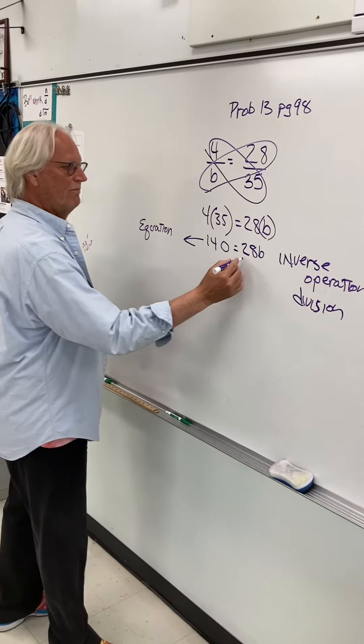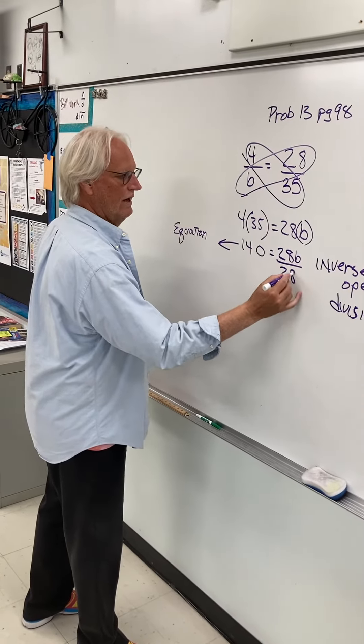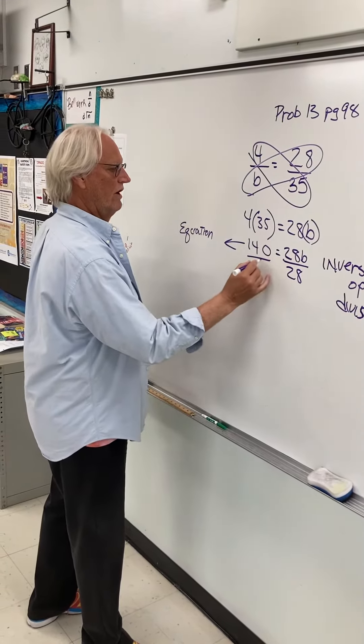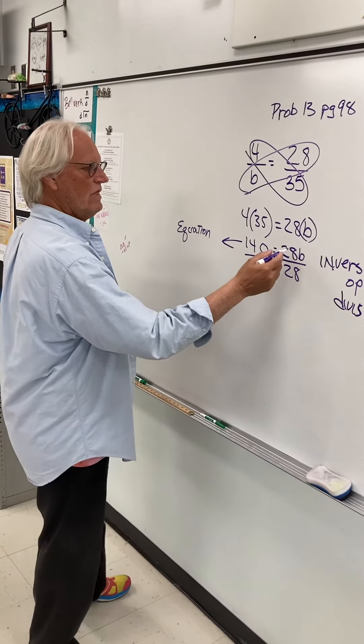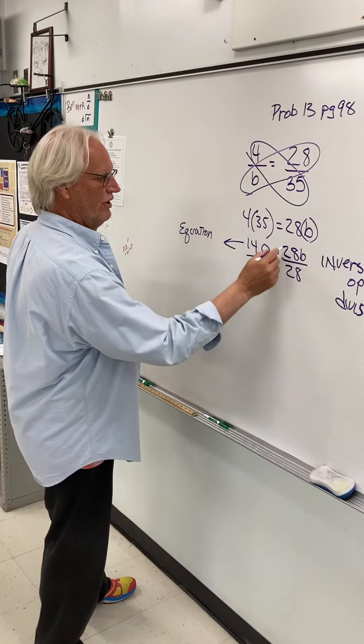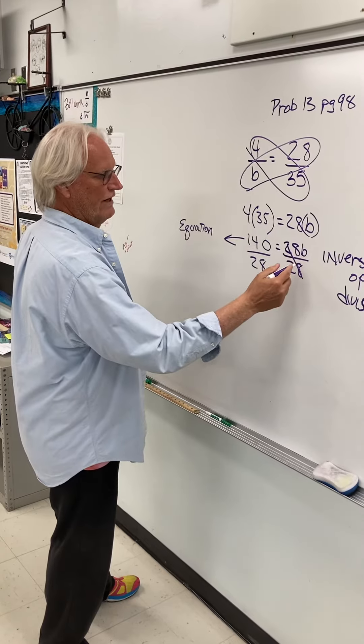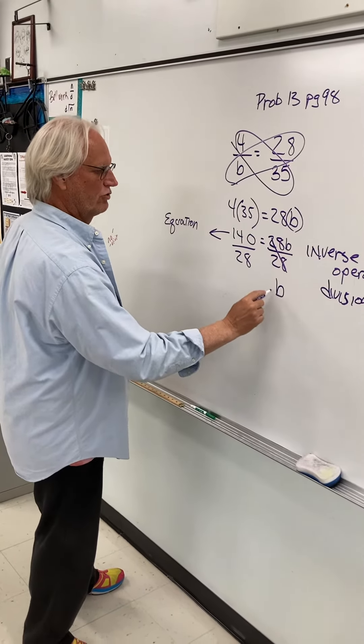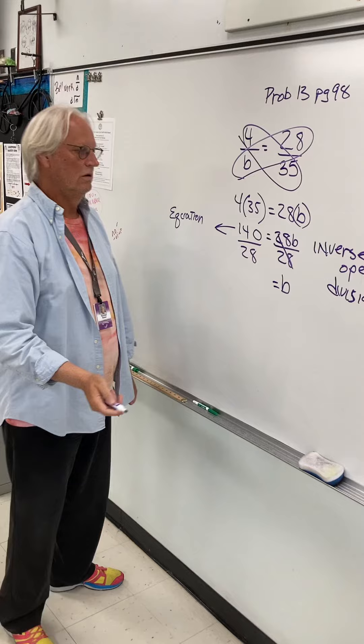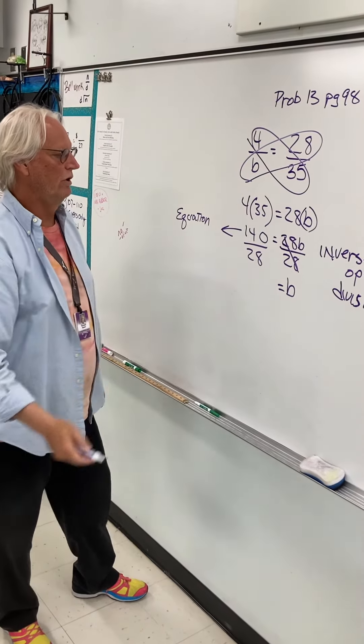So we're going to divide both sides by 28. Divide this side by 28. And so when we do this it cancels out. So the identity property allows me to just write b and then we're going to do 140 divided by 28.